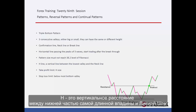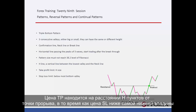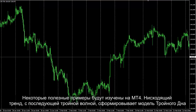H is the vertical distance between the bottom of the longest valley and the neckline. TP price is H pips away from the breakout point, while SL price is lower than the most bottom valley. Some useful examples will be studied on MetaTrader 4.